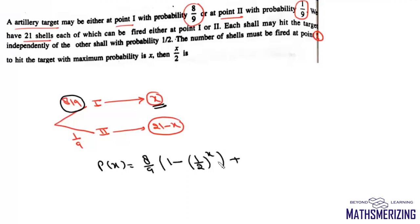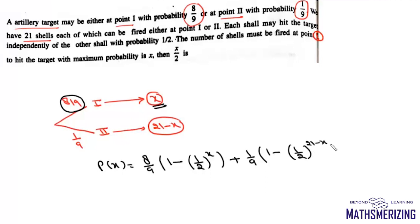Similarly for the second target, the probability is 1/9, and it is destroyed with probability 1 minus (1/2)^(21 minus x). We need to find the value of x for which this total probability is maximum.